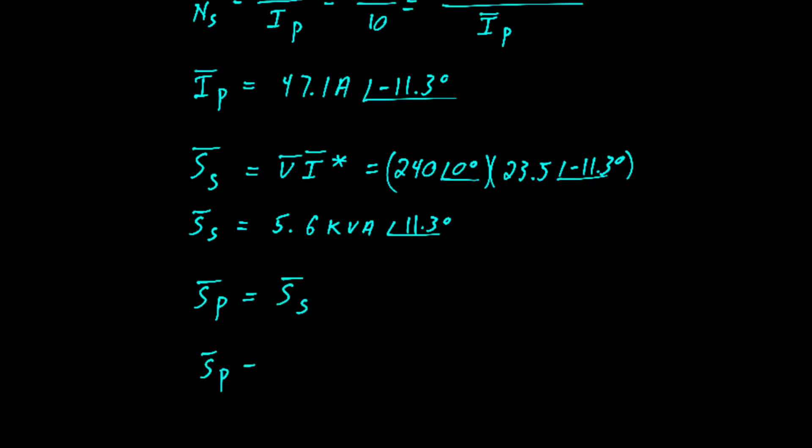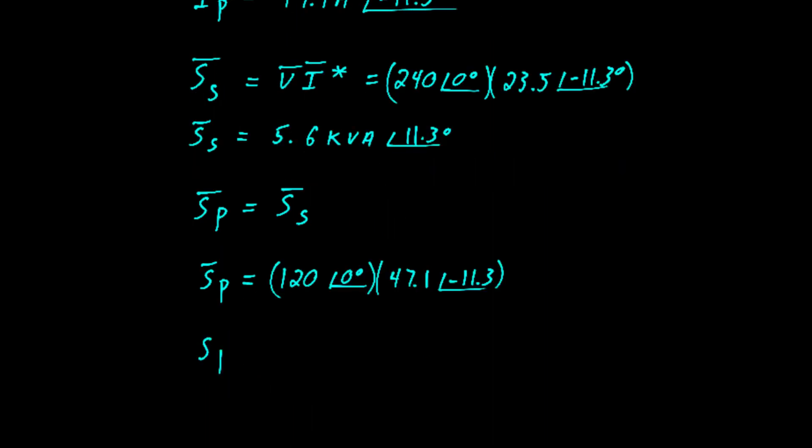Just to show that, we'll do the same calculation again. So now it's 120 volts by our 47 amps at angle 11 degrees. Again, I made that mistake on signs, be careful of that. Anyway, when we're done, we end up with the same 5.6 kVA at an angle of 11.3 degrees.